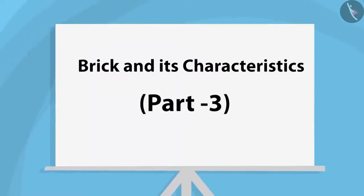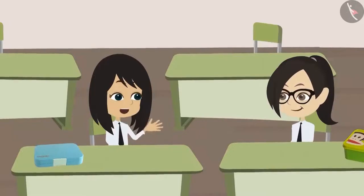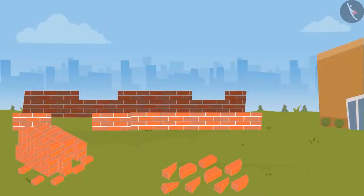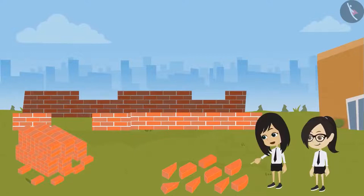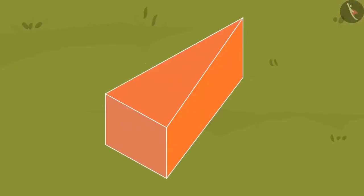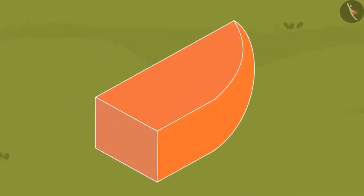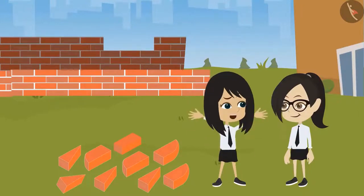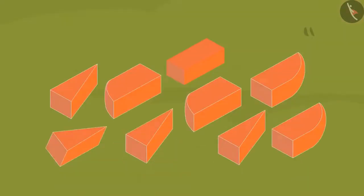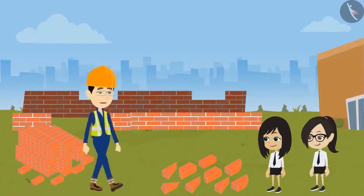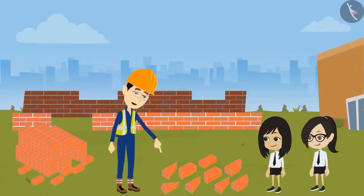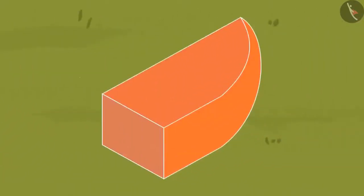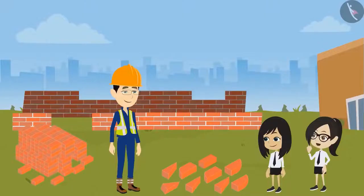Brick and its Characteristics Part 3. Vandana, let's go and see how much of our canteen has been built. Let's go — we will meet engineer sir as well. See Vandana, there are some other shapes of bricks here. This one is triangle in shape, and look here — this one has a round bottom. I don't understand this — engineer sir told us bricks are cuboid in shape. Then why are these of different shapes? These bricks were also of cuboid shape, but we needed a different shape, so we cut them according to our need. That is why some bricks are triangle-shaped and some are round.